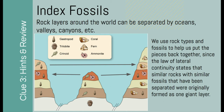For those of you who are confused with index fossils, a number of you had questions about it. For index fossils, the basic idea is that there are rock layers around the world that are separated by oceans, valleys, canyons, etc. But using index fossils, we can piece together which layers go together. We can also use the law of lateral continuity, which states that similar rocks with similar fossils were originally laid down as one giant layer that stretched across the whole area.